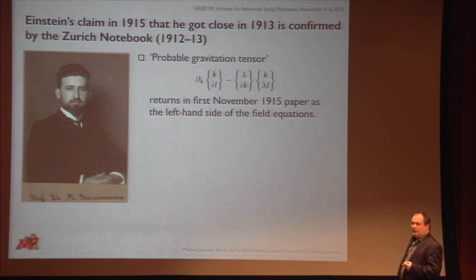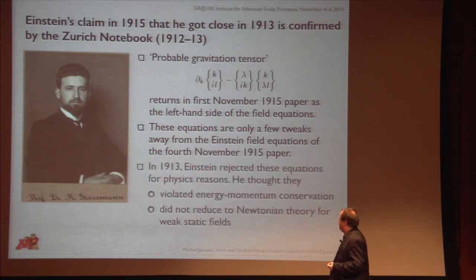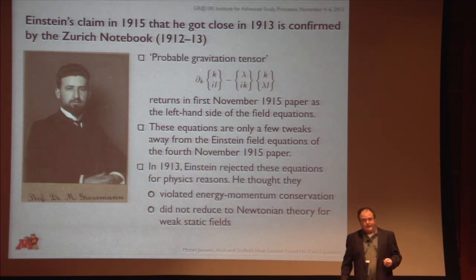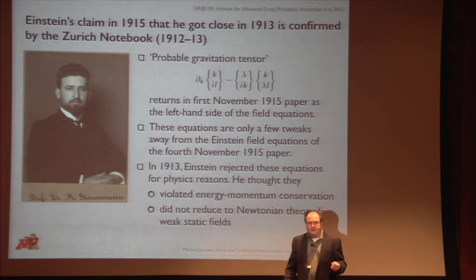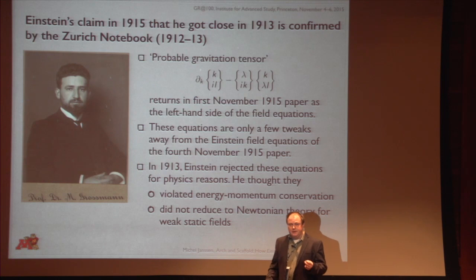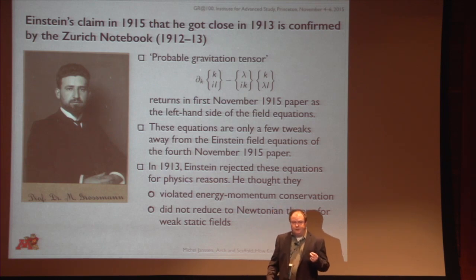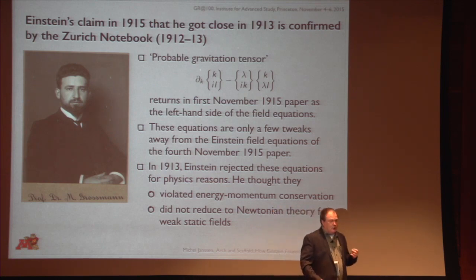So what went wrong in 1913? What went wrong is that Einstein couldn't see that these equations — which were very natural mathematically — made sense from a physical point of view. He couldn't work out that they reduced to Newtonian theory in the case of weak static fields, as they should, and that they were compatible with energy-momentum conservation.